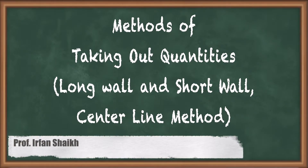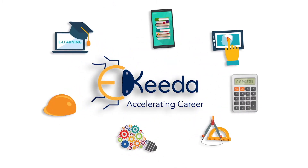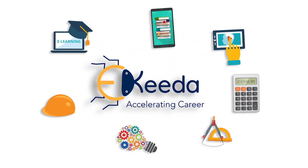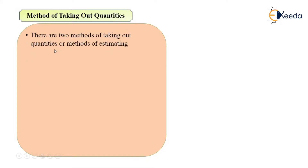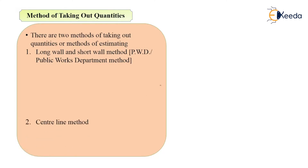In this video we are going to see methods of taking out quantities of various items of work. There are two methods of taking out quantities or methods of estimating. The first is the long wall and short wall method, also known as the PWD or public works department method. The second method is the centerline method.